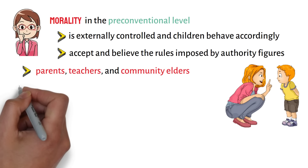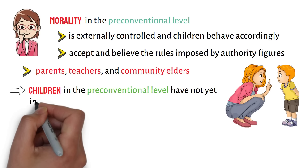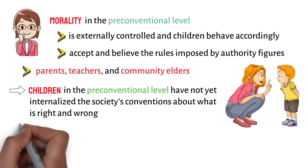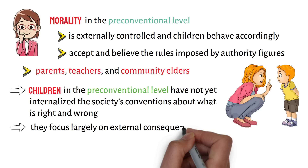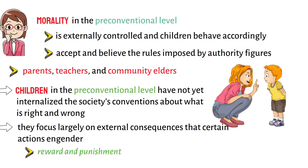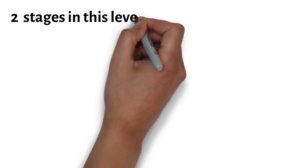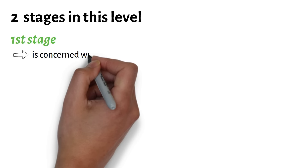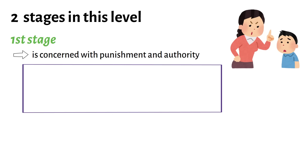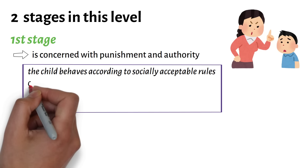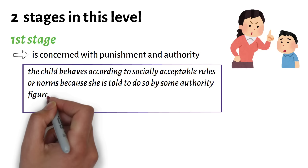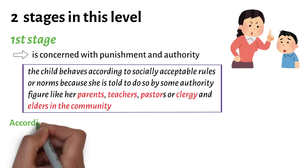Children in the pre-conventional level have not yet internalized society's conventions about what is right and wrong. Instead, they focus largely on external consequences that certain actions engender, such as reward and punishment. The first stage is concerned with punishment and authority. Here, the child behaves according to socially acceptable rules or norms because she is told to do so by an authority figure like her parents, teachers, pastors, or elders in the community. According to Kohlberg, the child obeys the rules to avoid punishment.